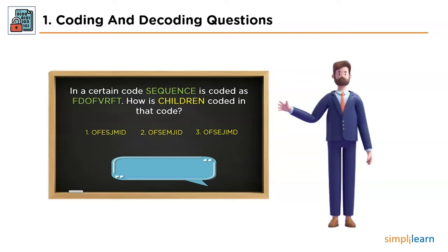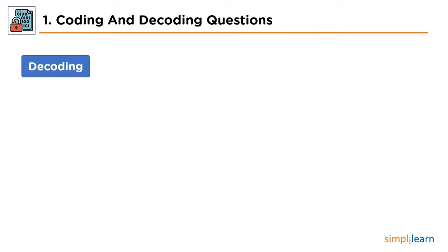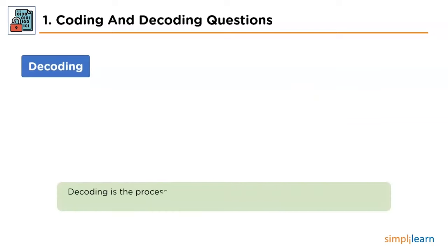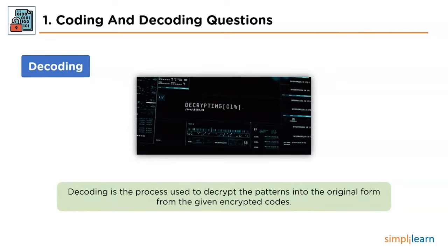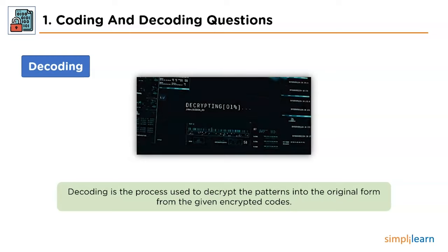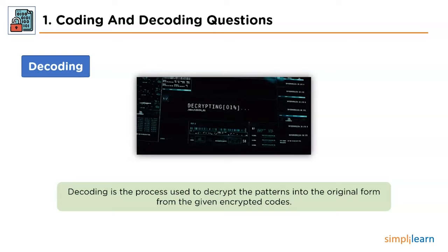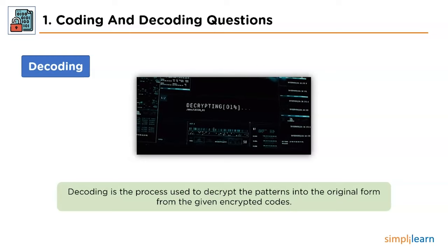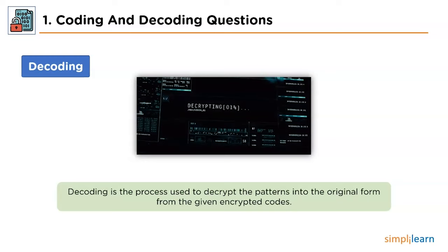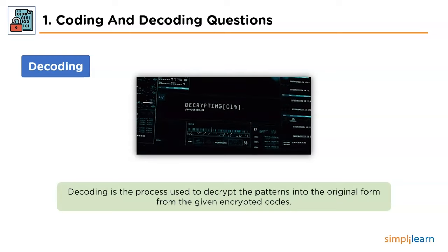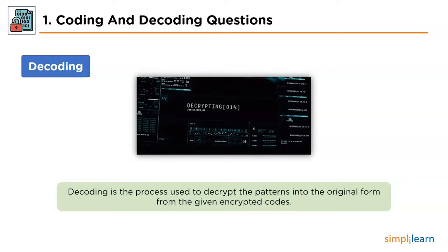Next we have decoding. Decoding is the process used to decrypt the patterns into their original forms. In other words, to achieve decoding, you'll require the logic of encoding. So the first thing you'll have to do in these types of questions is to find the key of encryption, or the logic behind encoding.